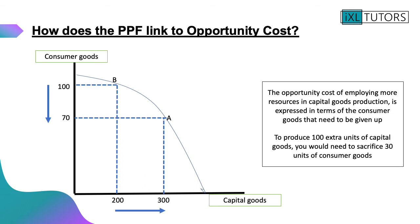The PPF also shows opportunity cost. We've got points B and A on this PPF — both are efficient combinations of output. We'll assume this economy was originally producing at point B and wants to change production to point A. The opportunity cost of employing more resources in capital goods production is expressed in terms of the consumer goods that need to be given up. To produce an extra 100 units of capital goods — moving from 200 at point B to 300 at point A — they would need to give up 30 units of consumer goods.